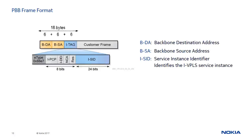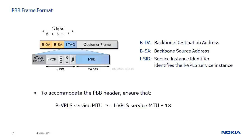When binding an IVPLS to a BVPLS, the PBB encapsulation overhead must be considered. The BVPLS service MTU must be at least 18 bytes larger than the IVPLS service MTU to accommodate the PBB header.